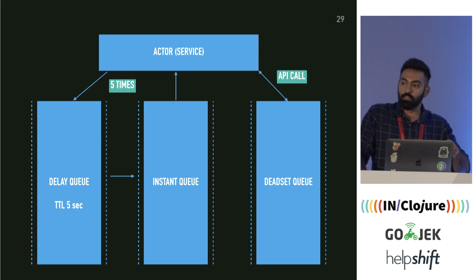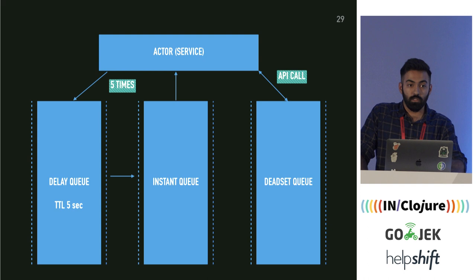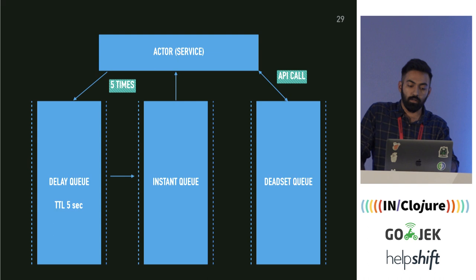You can configure this flow to happen five times. If it fails all the time, it gets put into a dead-letter queue. The actor does not retry a message from the dead-letter queue automatically — you have to make an API call to the actor, and then it retries those messages again.